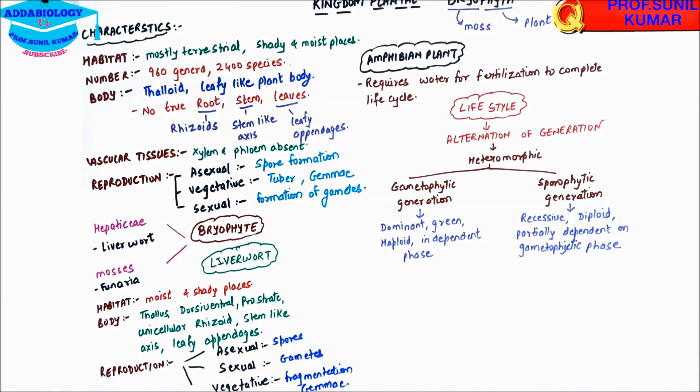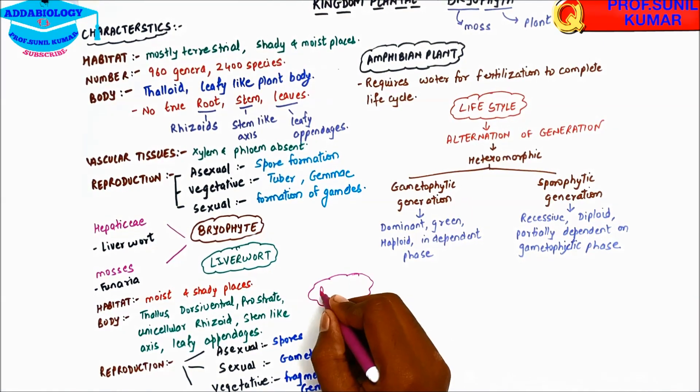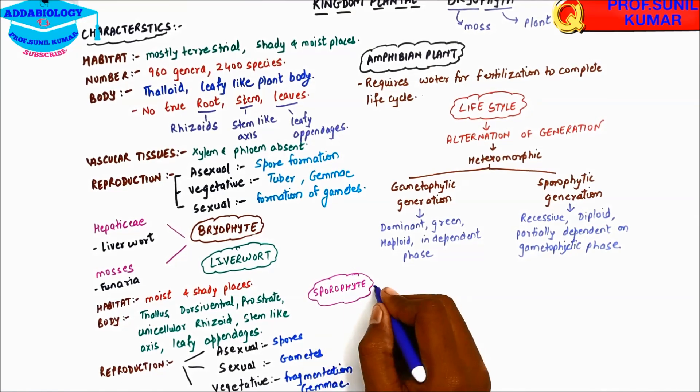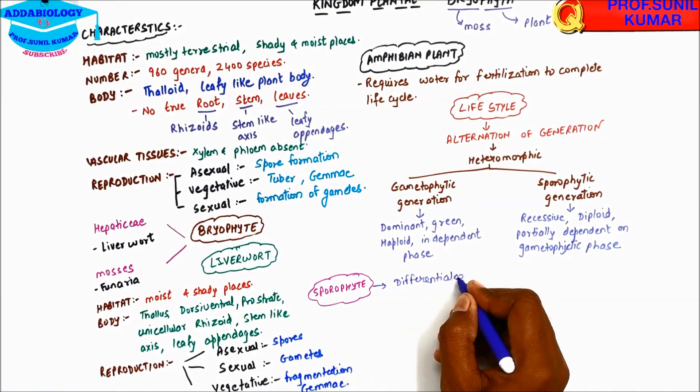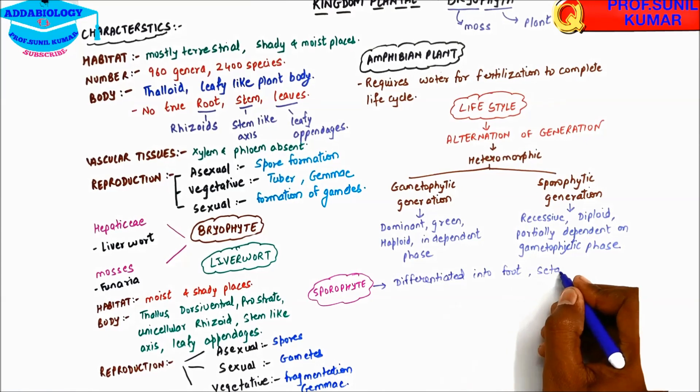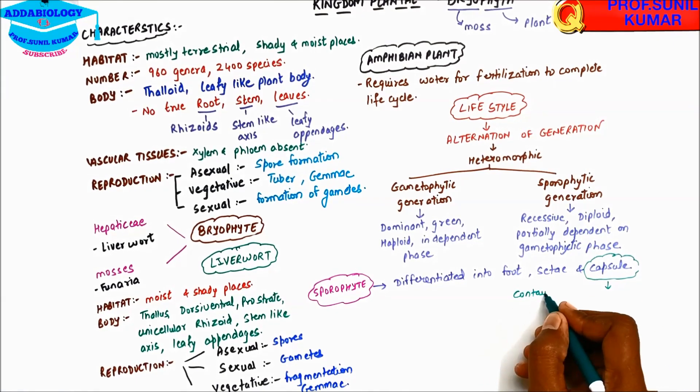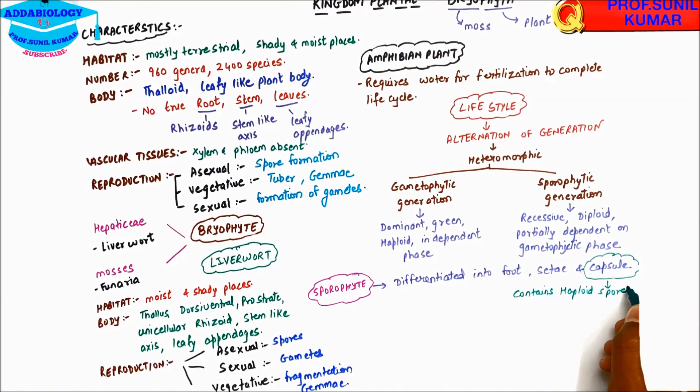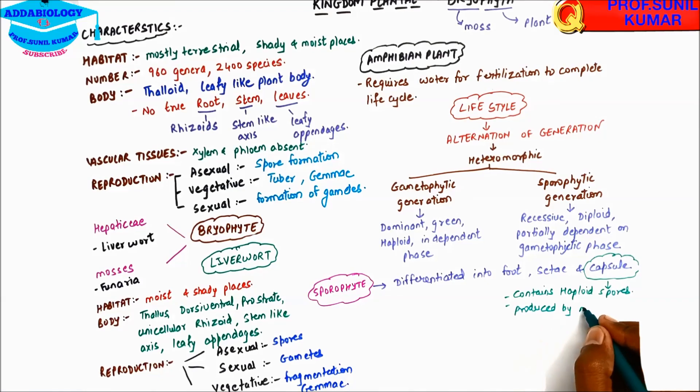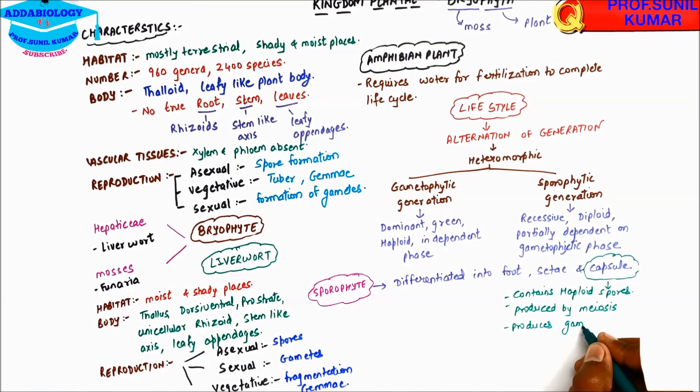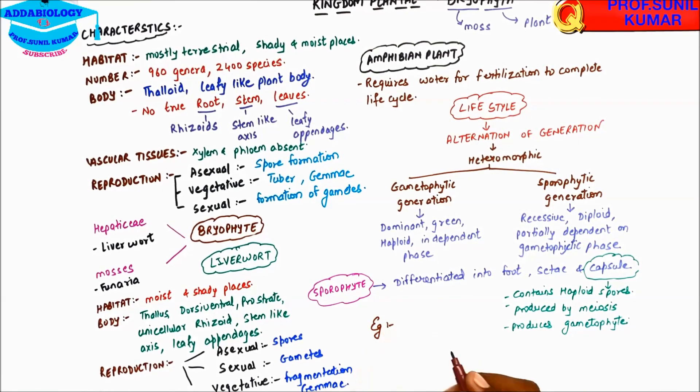When we talk about sporophyte of bryophyta, it is differentiated into foot, seta, and capsule. When we talk about capsule, it is the most important part because it contains haploid spores. They are produced by meiosis and they produce the gametophyte. Examples for liverwort are Riccia and Marchantia.